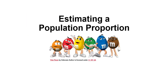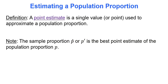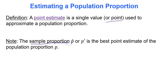Our first stop will be estimating a population proportion — that's the proportion or percentage of a population that has a specific characteristic. A point estimate is a single value or point used to approximate a population proportion. It's basically a sample proportion, and it's used as a starting point to build our interval. We start with a certain value, then build our interval around that predicted value. The notation for the sample proportion is p-hat.